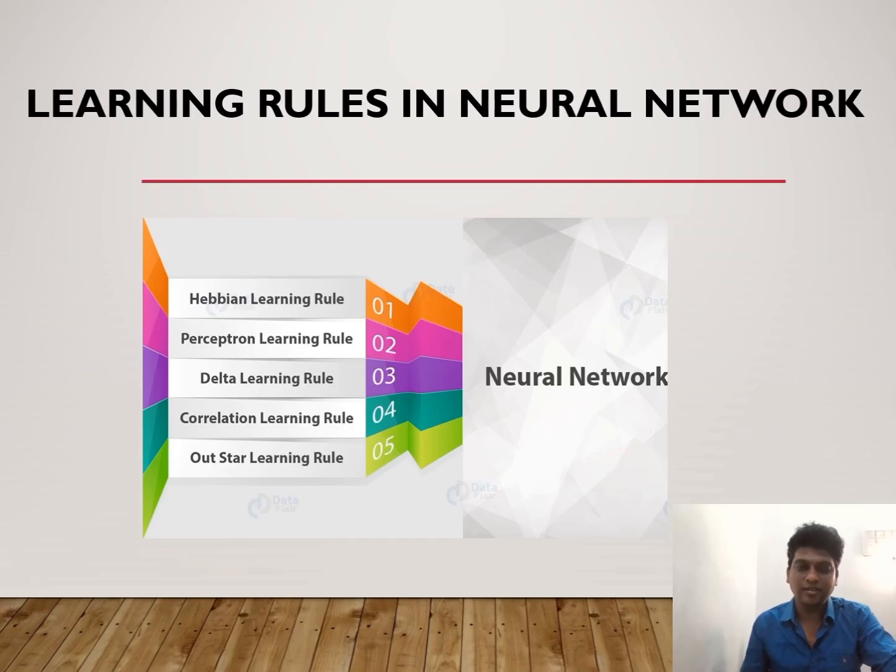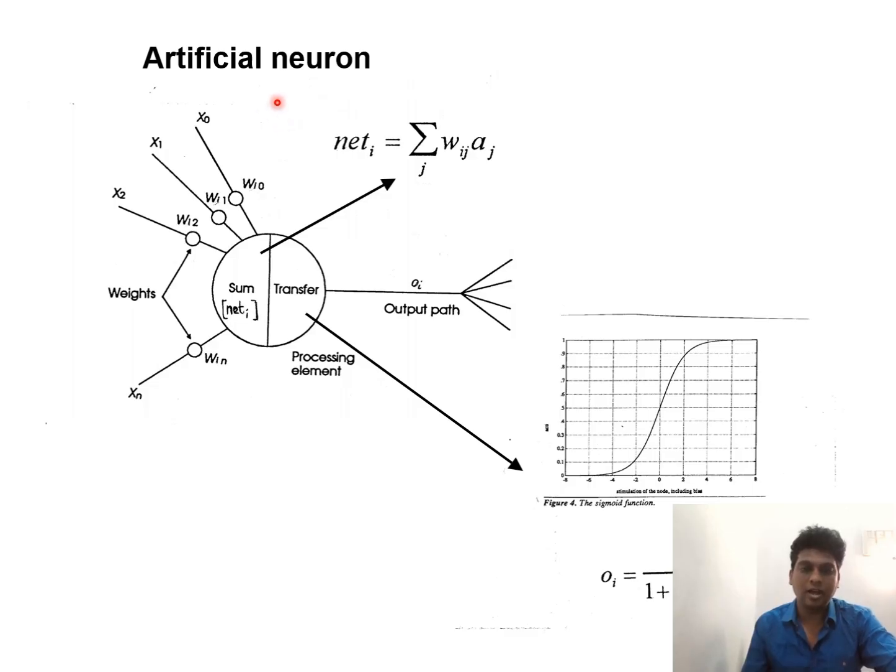Hi everyone, today we will discuss the various learning rules in neural networks and deep learning. Here's a simple example of an artificial neuron: x₀, x₁, x₂ up to xₙ represent the input vectors, and w₀ to wₙ represent the weights corresponding to the input vectors. The net weight is the summation of weight and input, and we can apply a transfer function like the sigmoid activation function to get the output.